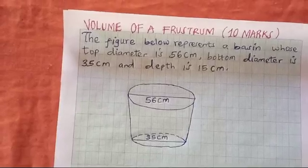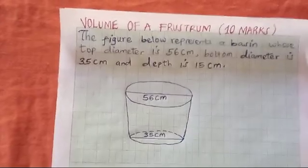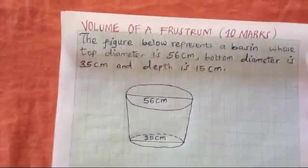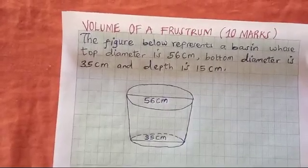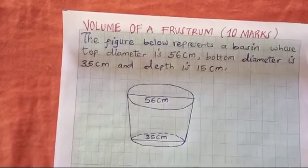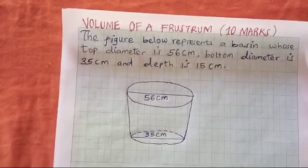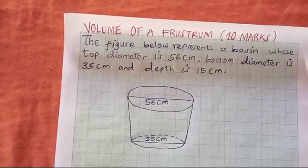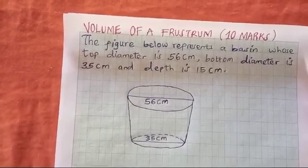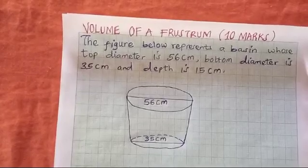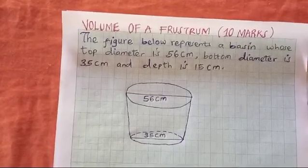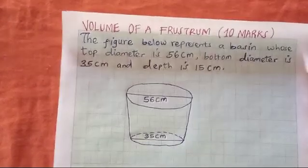Volume of our first frustum. The figure below represents a basin whose top diameter is 56 centimeters, bottom diameter is 50 centimeters, and the depth is 15 centimeters.